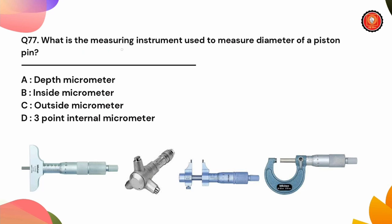The next question is, what is the measuring instrument used to measure diameter of a piston pin? Options are depth micrometer, inside micrometer, outside micrometer, or 3-point internal micrometer.